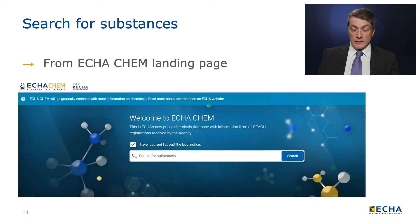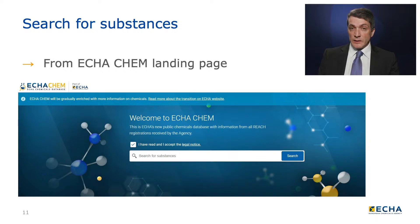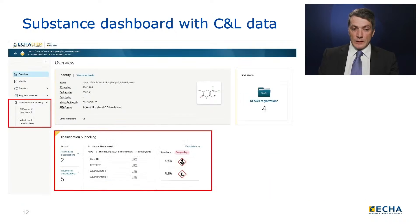To access the CNL information, you begin from the EkaChem homepage where you have the search for substances. You can enter any substance identifier of any kind and search to get meaningful results where available. Once you have selected a substance of interest, you will see the substance dashboard. The key information ECHA holds will be shown.